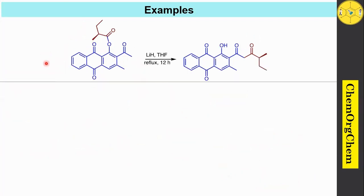This one is an anthraphenone compound. Here you see this oxygen having an acyl group. When you use lithium hydride and THF, it readily undergoes Baker-Venkataraman rearrangement — here you see this acyl group transferred into this carbon to produce this corresponding product.